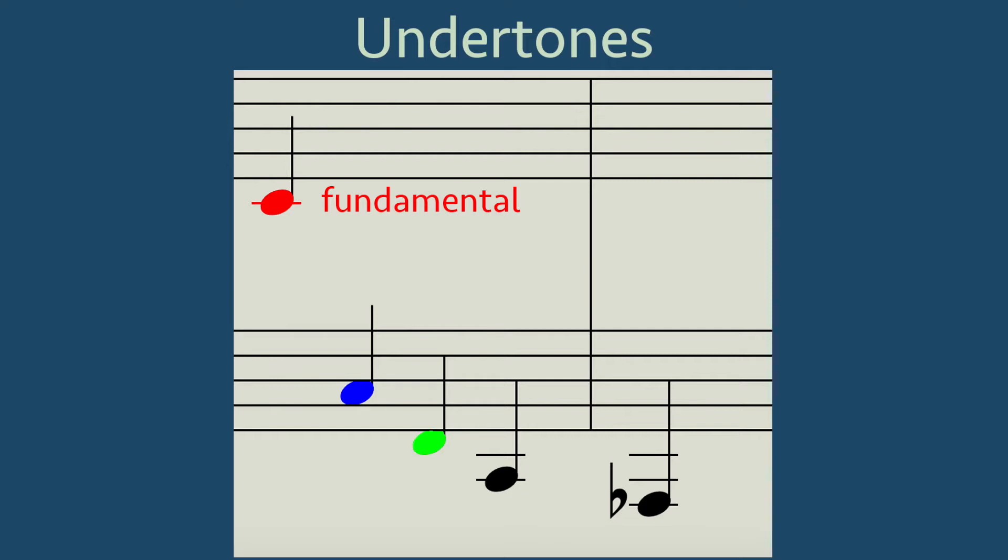The third subharmonic is the F below the previous C, the fourth subharmonic is the C two octaves below the fundamental, and the fifth subharmonic is the A flat below the previous C.